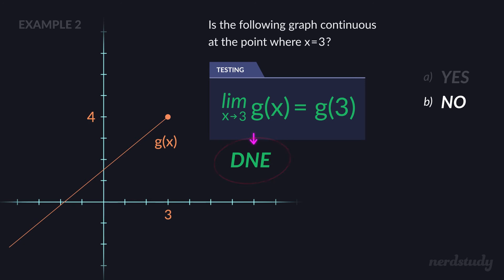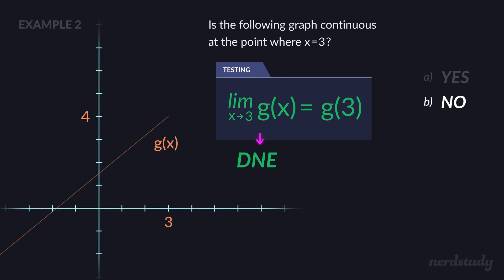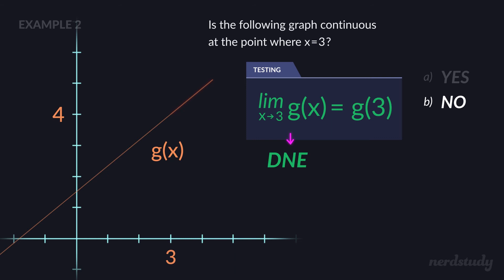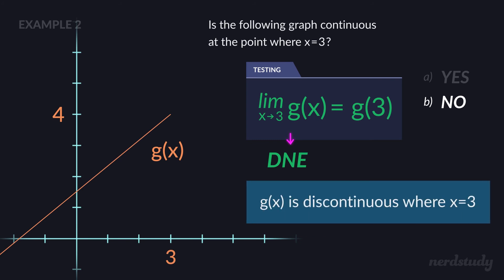Just for exercise purposes, g(3) equals four. So if this graph were to continue even just a tiny bit to the right — even 0.00001 units — so that the right-sided limit as x approaches three also equaled four, making the overall limit equal four, then yes, we would have been able to say it is continuous. But because the graph literally cuts off at three with nothing beyond it, even 0.00001 beyond three to the right, we know the limit overall doesn't exist and the function is discontinuous.